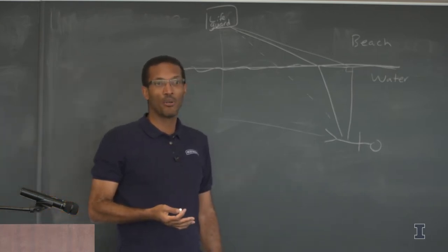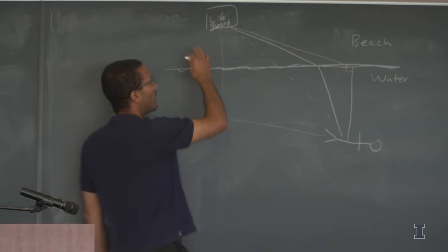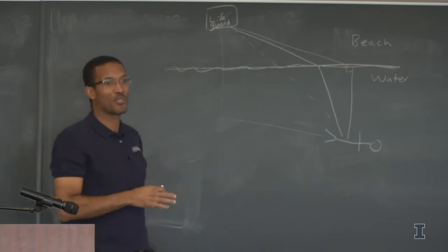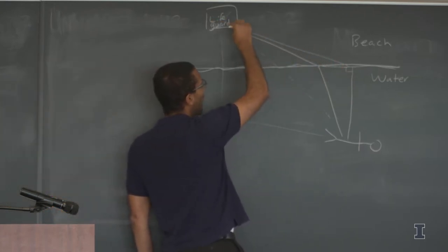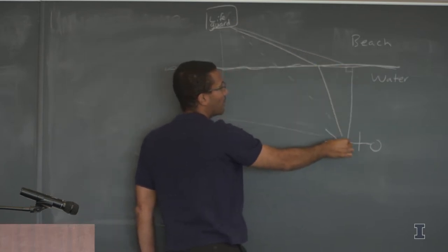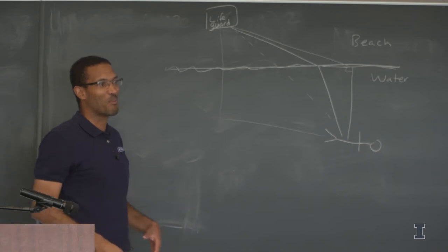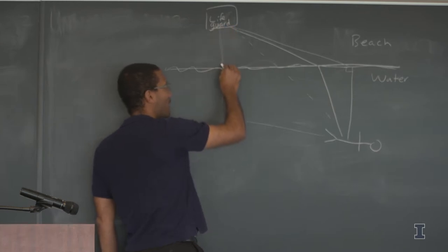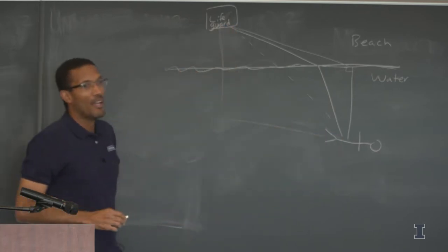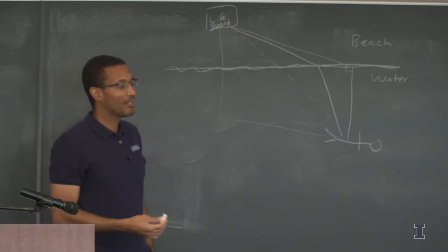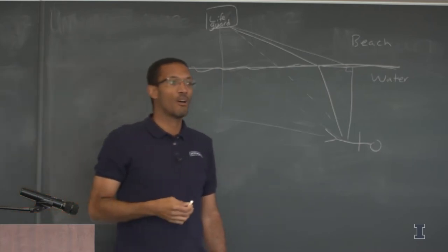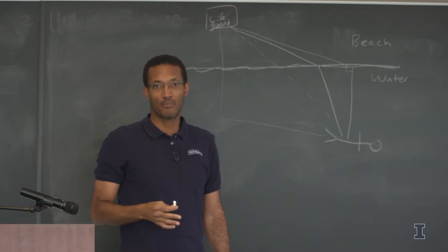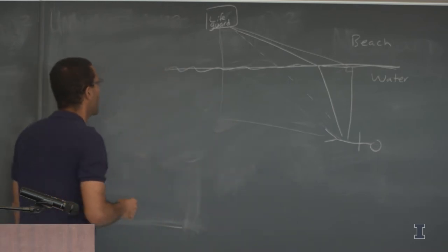If I could run millions of times faster than I can swim, I'd minimize swimming and go along the beach then turn perpendicular. If I were Aquaman — super fast swimmer but can't run — I'd go straight into the water. If I run and swim at exactly the same speed, the shortest distance along a straight line is best. The path depends on the speed in the two different materials, and this is exactly how lenses work.